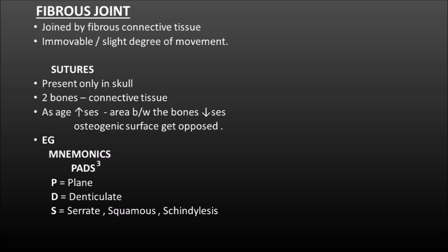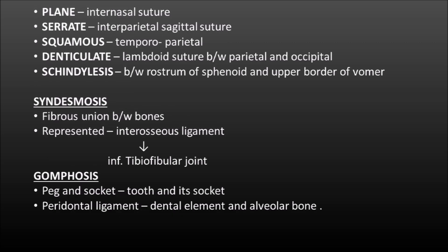Fibrous joint is joined by fibrous connective tissue and shows either immovability or a slight degree of movement. The first type is sutures, present only in the skull. Two bones are separated by connective tissue, and the area between the bones decreases with age so that the osteogenic surface becomes opposed. To remember the four examples of sutures, use the mnemonic 'PAD S-cubed': P for plane (internasal suture), D for denticulate (lambdoid suture between parietal and occipital), S for serrate (interparietal sagittal suture), squamous (temporoparietal), and schindylesis (between the sphenoid and upper border of vomer).